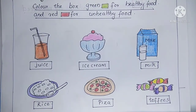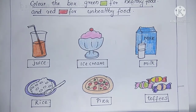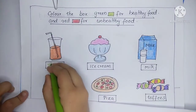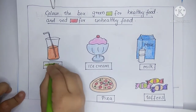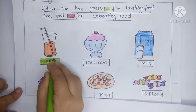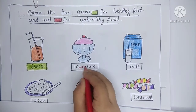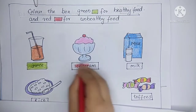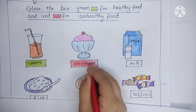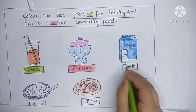Color the box green for healthy food and red for unhealthy food. Juice — healthy food. Ice cream — unhealthy food. Milk — healthy food.